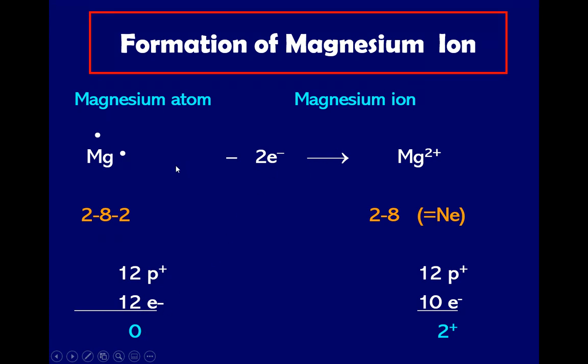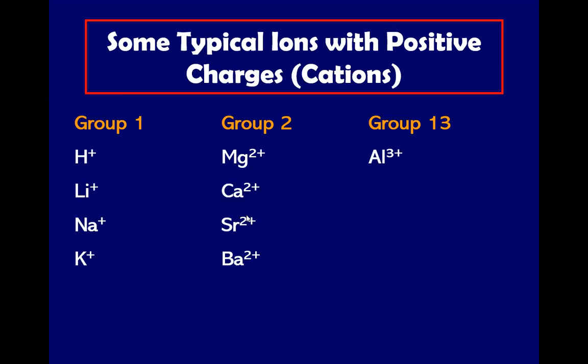But to become stable, magnesium requires to lose two electrons. Since minus two the electrons, it will have 10 as the number of electrons, so 12 minus 10 is 2. So the charge of magnesium is positive 2. And remember, magnesium can be found in family number two.